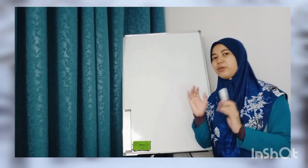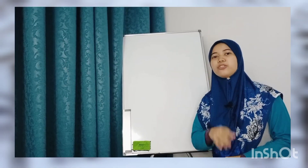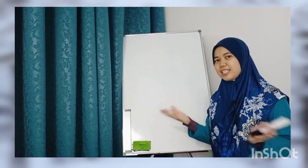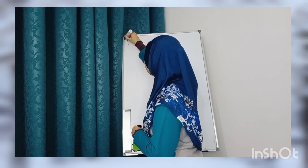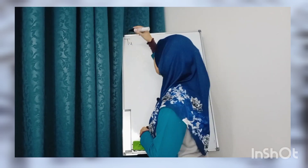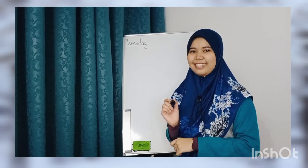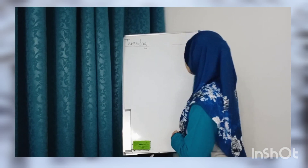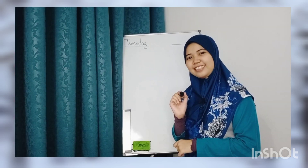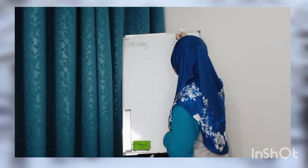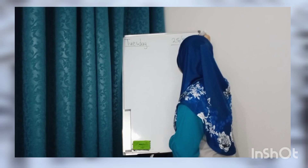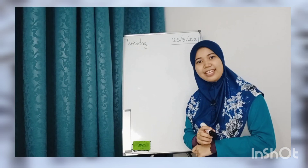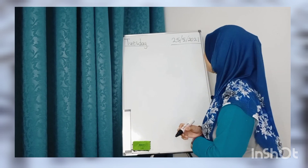Let's start now. First of all, when you open your E1 exercise book, I want you to write down the day and the date, just as usual, just like what we have done in class. For example, today is Tuesday, so write down on the left side: Tuesday. Next, write the date. Today is the 25th of May 2021. Have you written the day and the date? Good.